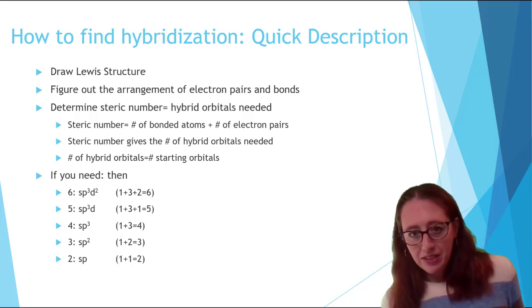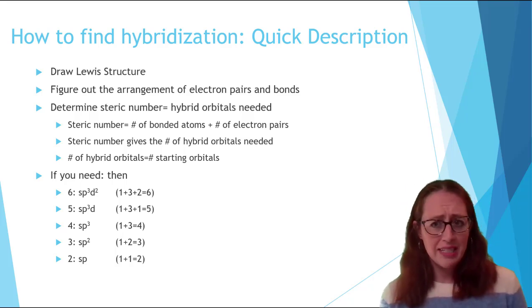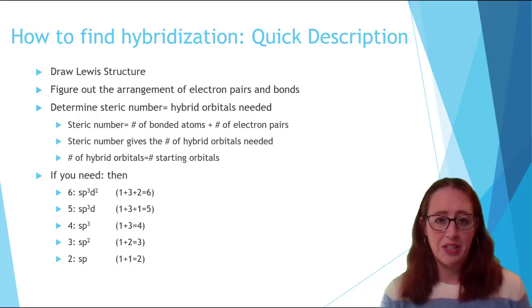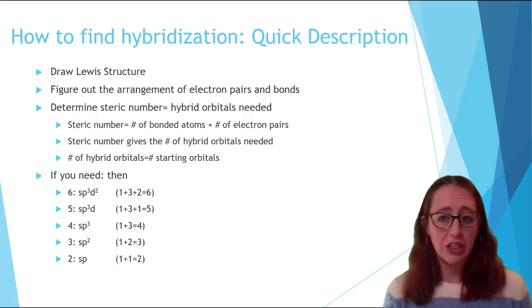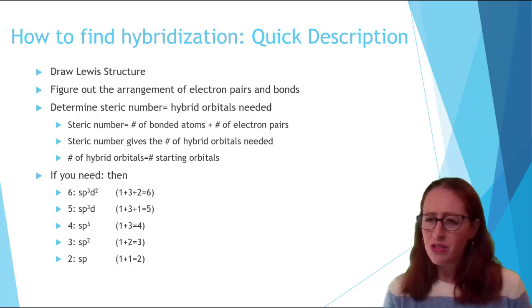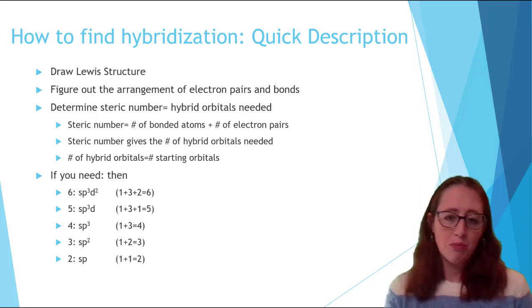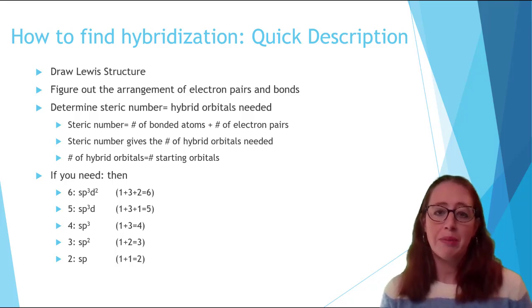Now with all that description behind us, finding the hybridization of an atom is actually a lot simpler than all those pictures. Typically where people go wrong is by skipping or incorrectly drawing the Lewis structure. So be sure if you need more practice on Lewis structures that you go back and practice more of those. Practice, practice, practice, and more practice is how you learn Lewis structures.